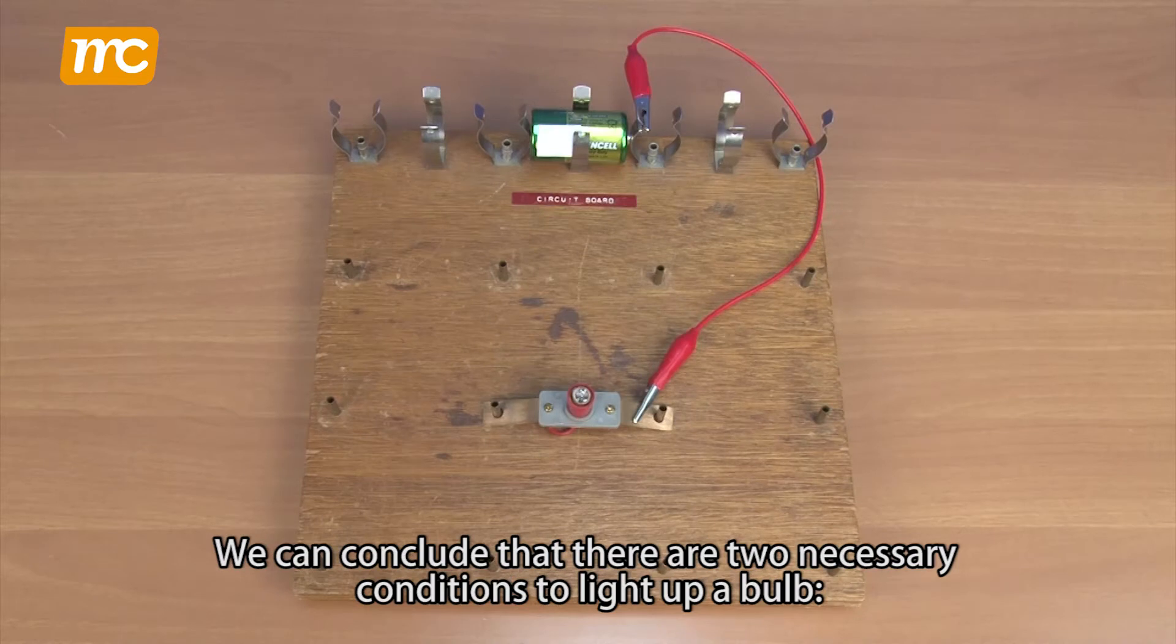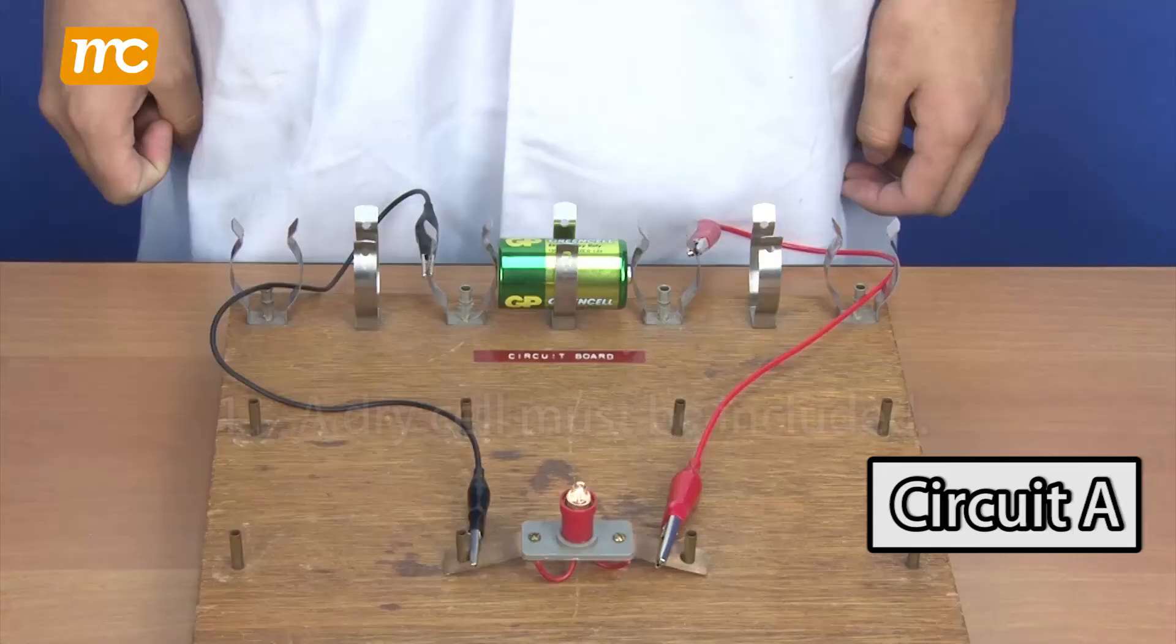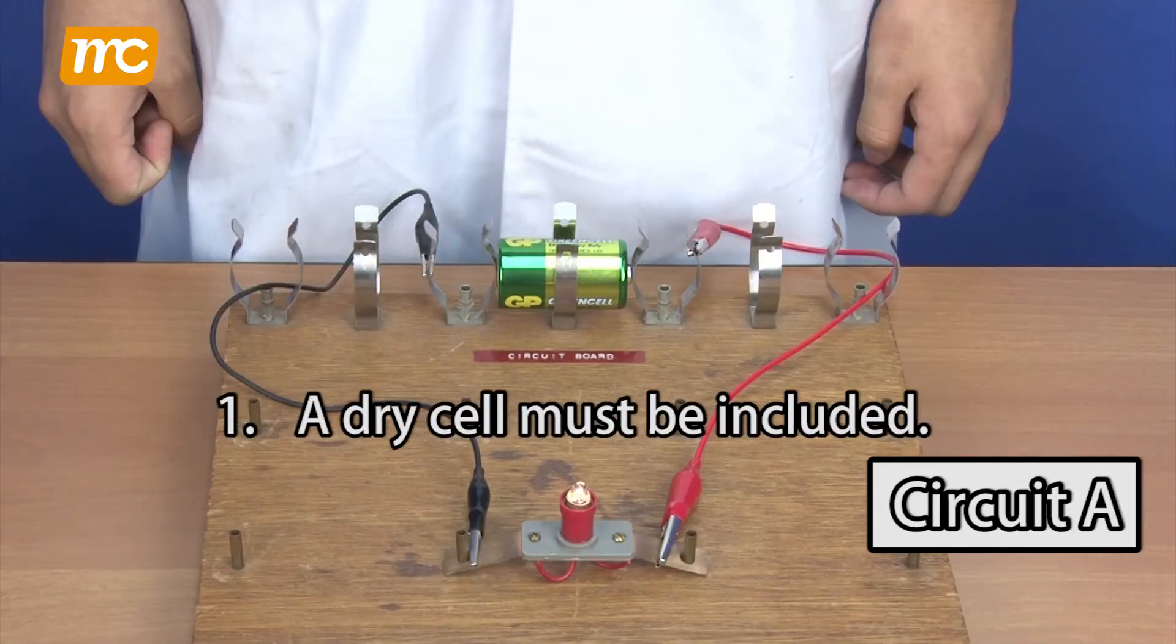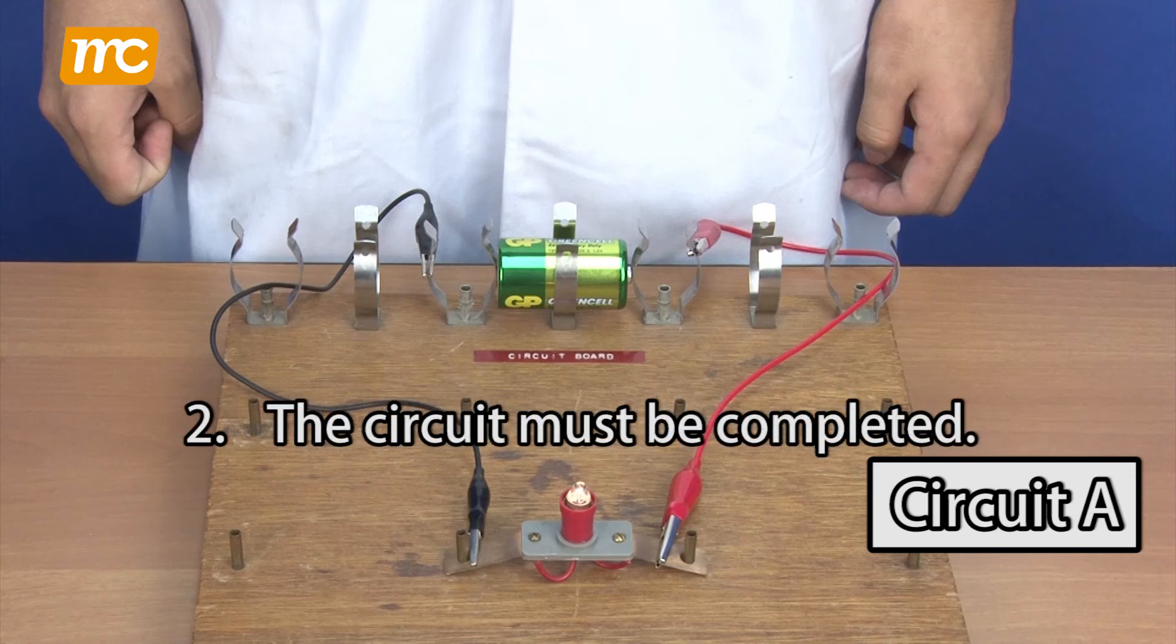We can conclude that there are two necessary conditions to light up a bulb. Number one, a dry cell must be included. Number two, the circuit must be completed.